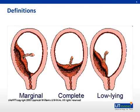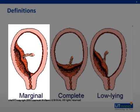Placenta previa describes a situation in which the placenta is overlying or near the internal cervical os. This occurs in one of 300 deliveries. Marginal previa is when the placenta is immediately adjacent to the internal cervical os but does not cover it.